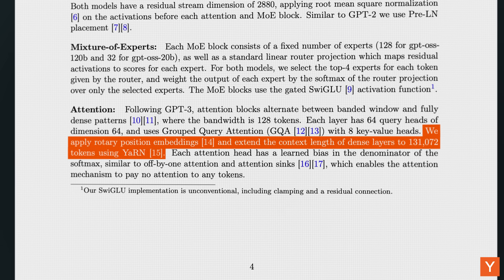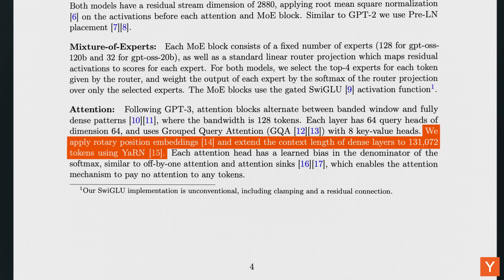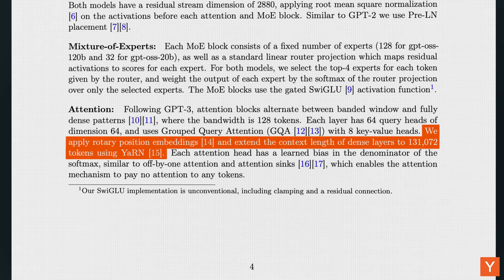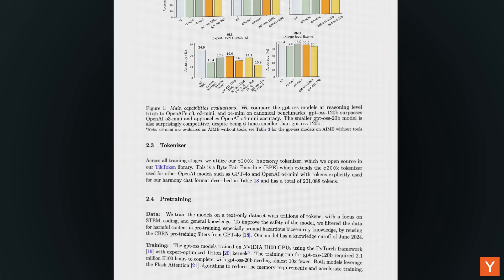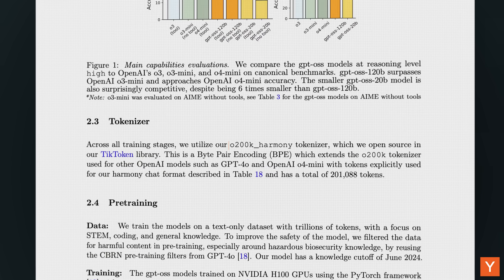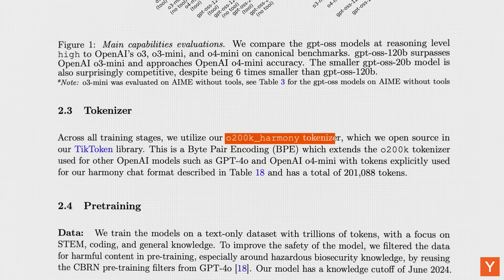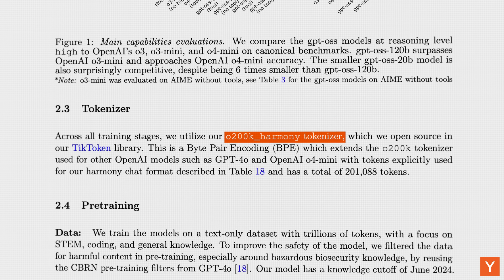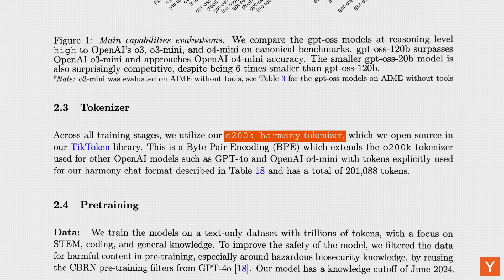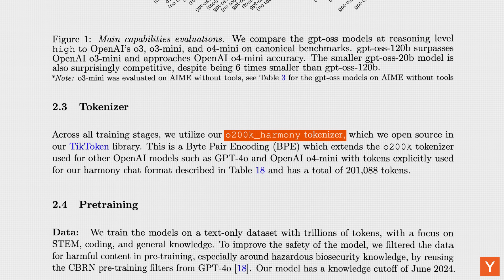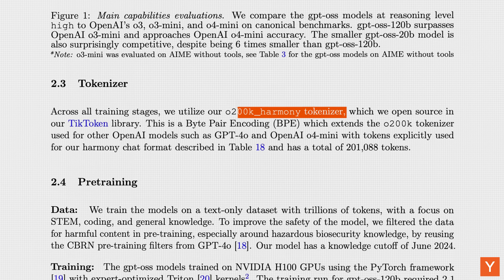One standout capability of the model is its 131,000 token context window, which it achieves by applying YARN scaling during pre-training rather than as an inference time adjustment — we'll touch on what this means a little later in the video. For GPT-OSS, OpenAI makes use of their open-source O200K Harmony tokenizer, a byte-pair encoding tokenizer with over 200,000 tokens that builds on the O200K tokenizer used in models like GPT-4o.